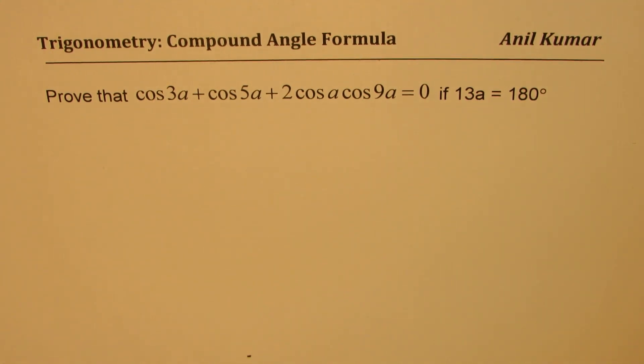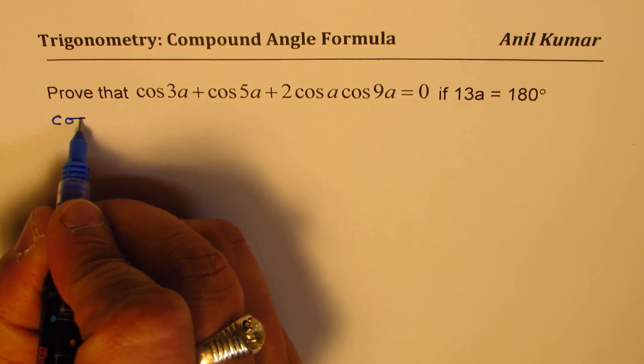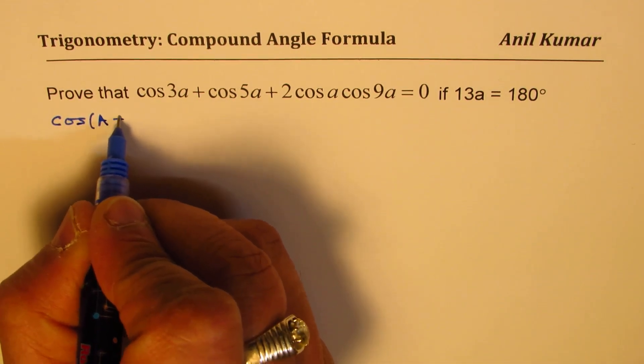Now to prove this identity we might need to apply some formulas. So let me share those formulas with you and then we will begin the proof. One of them is cos of capital A plus B,